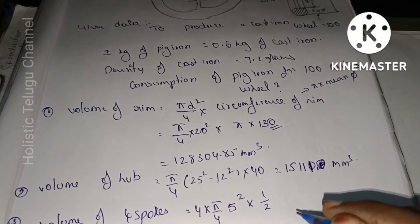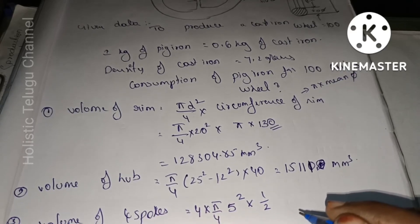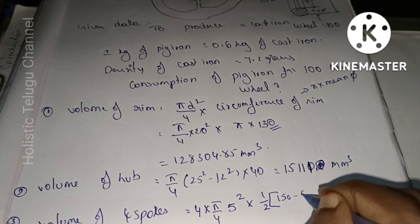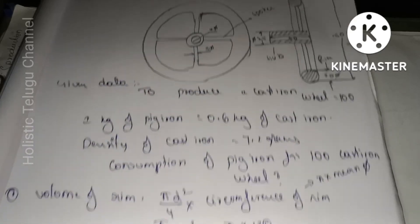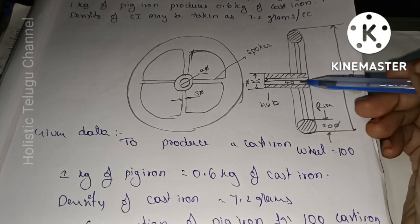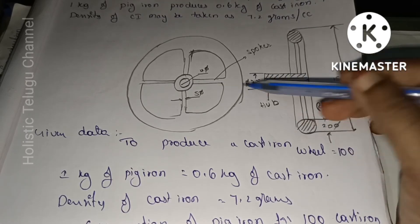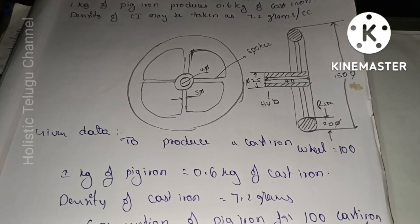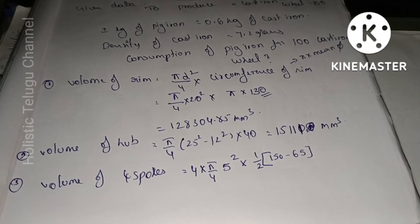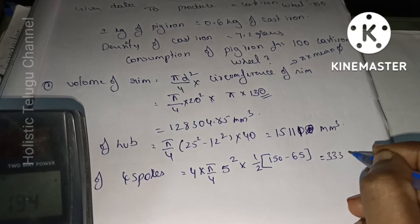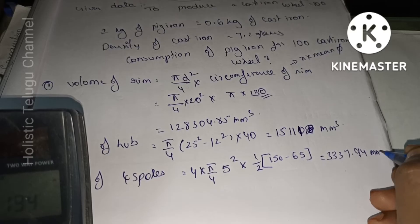The length of the spokes is calculated as 150 minus 65. The total is 150, and the rim thickness is 40 plus 20. So we calculate the length of the spokes accordingly. The volume of 4 spokes calculates to 3337.94 mm³.